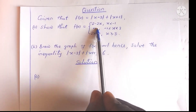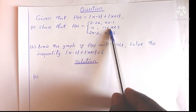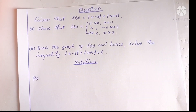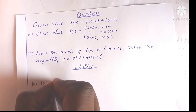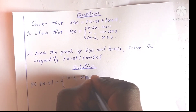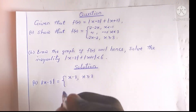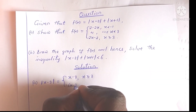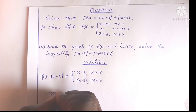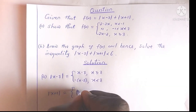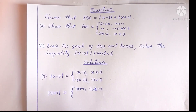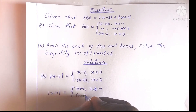To convert this absolute value function to a piecewise defined function, we need to start by defining the two absolute value functions properly. The absolute value of x minus 3 equals x minus 3 if x is greater than or equal to 3, or negative of x minus 3 if x is less than 3. Similarly, the absolute value of x plus 1 equals x plus 1 if x is greater than or equal to negative 1, or negative of x plus 1 if x is less than negative 1.